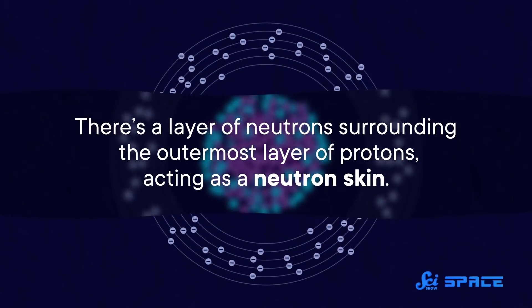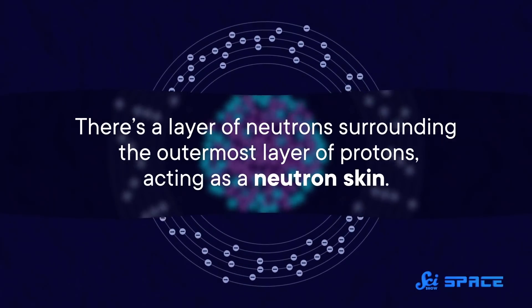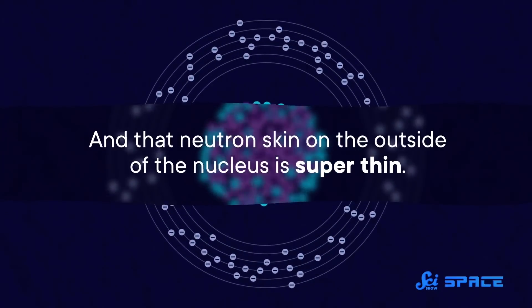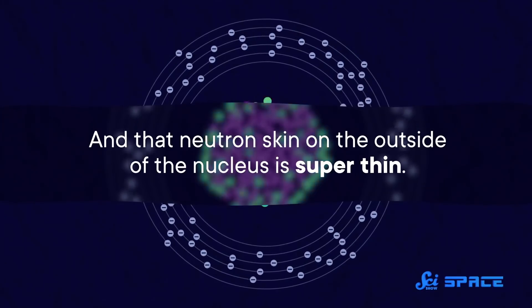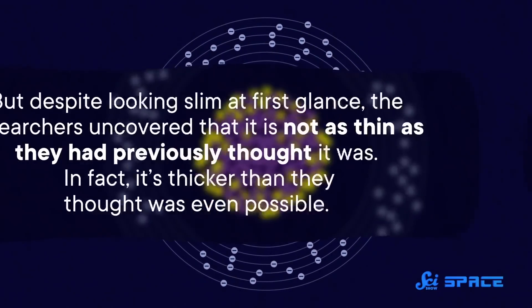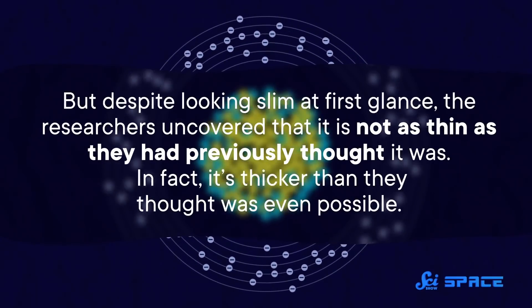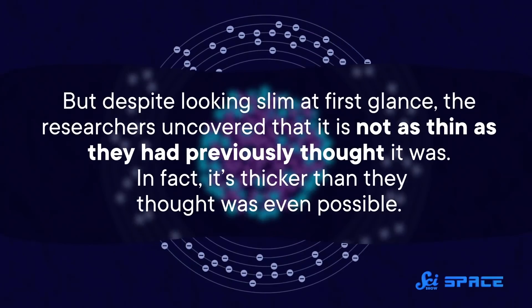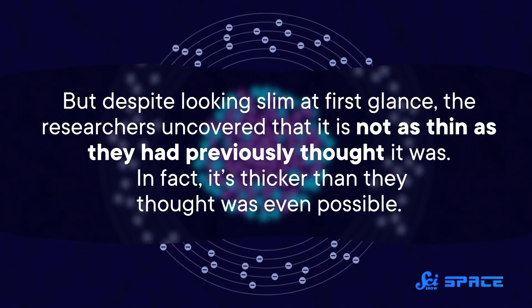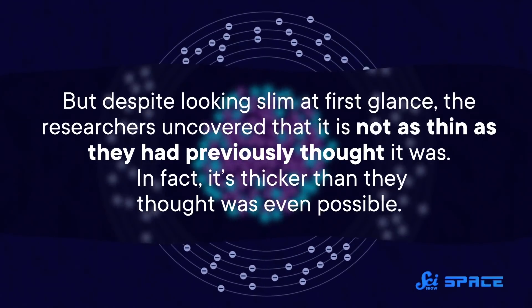But we can learn even more from the space where the protons stop and the neutrons start. There's a layer of neutrons surrounding the outermost layer of protons, acting as a neutron skin. And that neutron skin on the outside of the nucleus is super thin. But despite looking slim at first glance, the researchers uncovered that it is not as thin as they had previously thought it was. In fact, it's thicker than they thought was even possible.